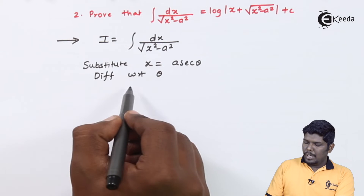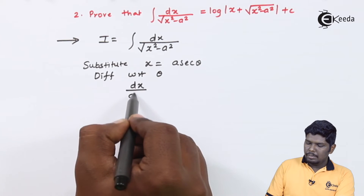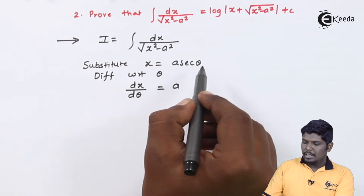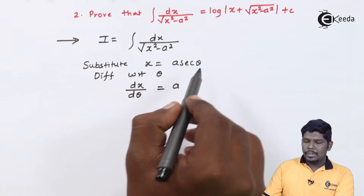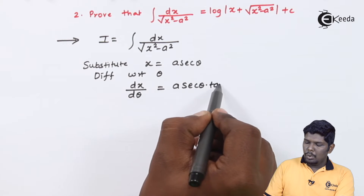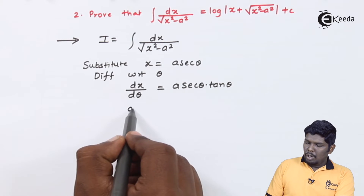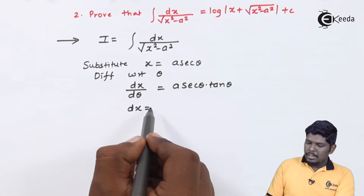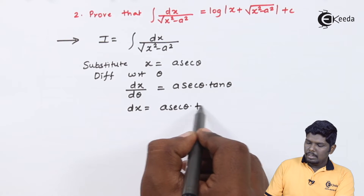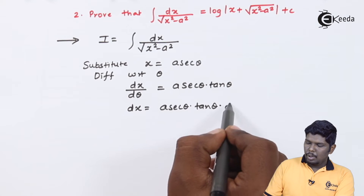The derivative of x with respect to theta will be dx by d theta. Here, a is as it is, and the derivative of sec theta will be sec theta into tan theta. Therefore, the value of dx becomes a sec theta into tan theta into d theta.